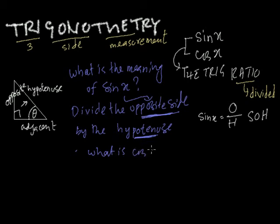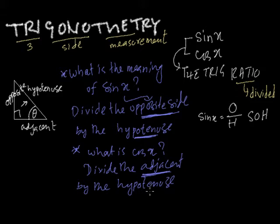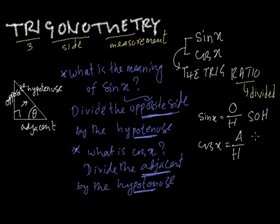Similarly, cos x means: divide the adjacent side by the hypotenuse. The adjacent side is the one next to angle x, and the hypotenuse is always the longest side. So cos x equals adjacent divided by hypotenuse. You can remember it with the mnemonic 'CAH' — C for cosine, A for adjacent, H for hypotenuse. These two are called the trigonometric ratios because two sides are divided.